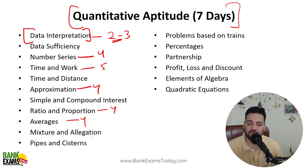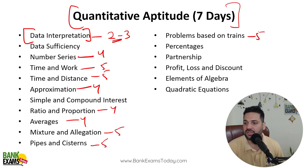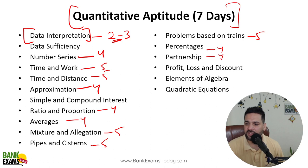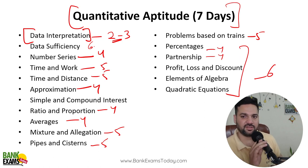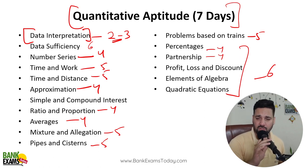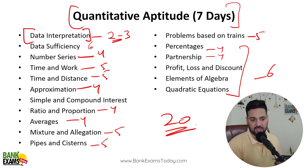You can do pipes and cisterns, time speed and distance, mixtures and allegation, problems based on trains — these are related topics. Percentages and partnership you can cover on day 6. Within 6-7 days you can cover the full syllabus of quantitative aptitude — it's mostly revision. There are 20 questions and you need to attempt all of them; there is no negative marking.